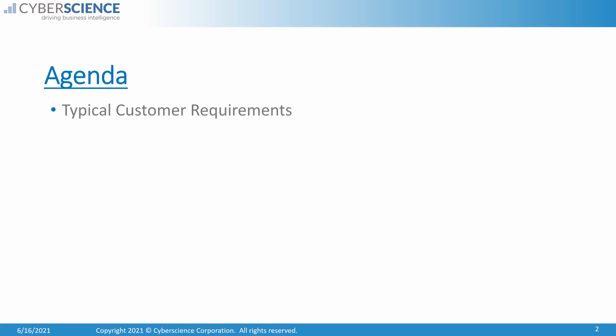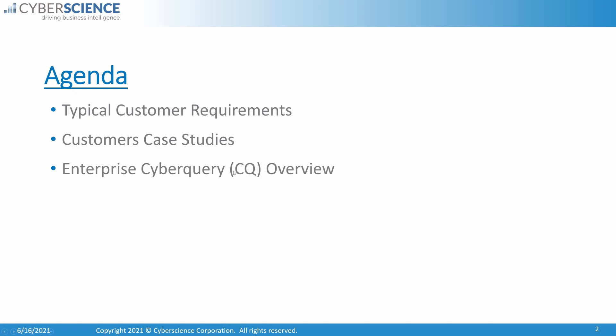I'll talk about the connection to the cloud as we go along. The software supports any version of Sightline, including multi-tenant cloud-based versions of CSI. We've recently gone through a name change — the software used to be called Enterprise CyberQuery or ECQ, and we've now changed it to CQ or just CyberQuery. If I slip up and say ECQ, it all means the same thing. We'll save most of our time for showing you the software and how it works with Sightline or CSI.